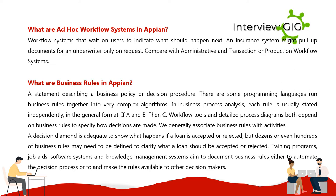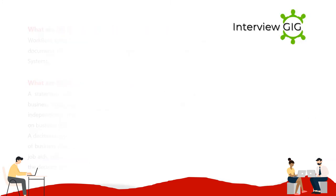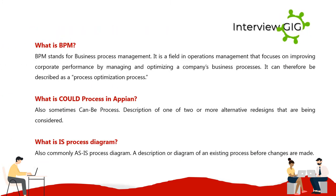Training programs, job aids, software systems, and knowledge management systems aim to document business rules, either to automate the decision process or to make the rules available to other decision makers. What is BPM? BPM stands for business process management. It is a field in operations management that focuses on improving corporate performance by managing and optimizing a company's business processes. It can therefore be described as a process optimization process.